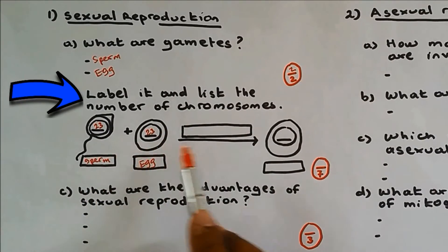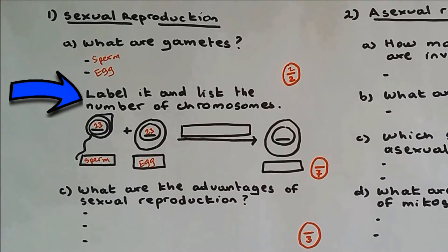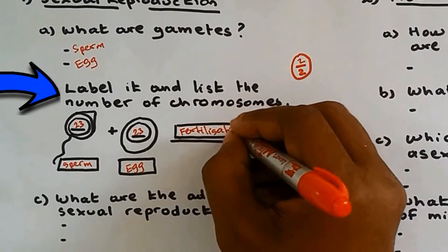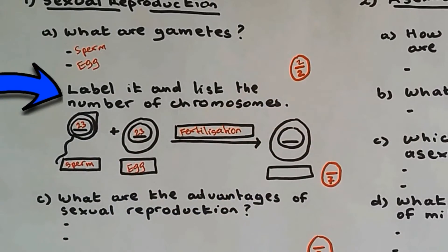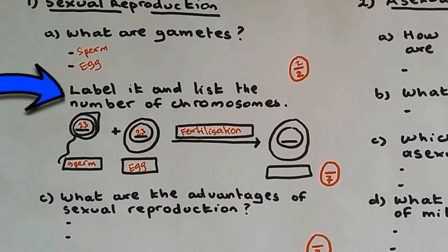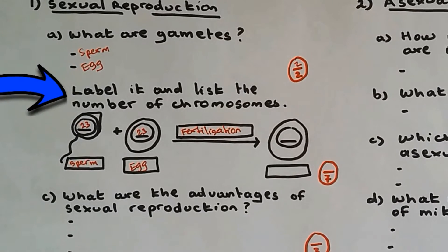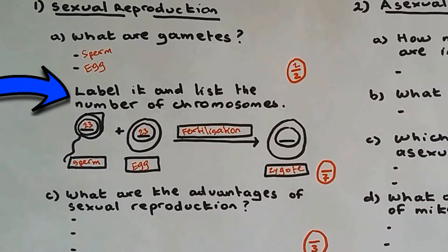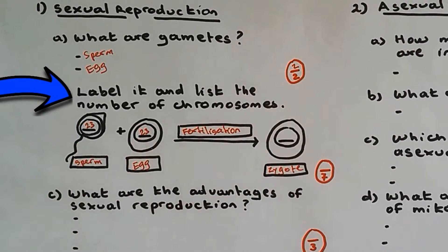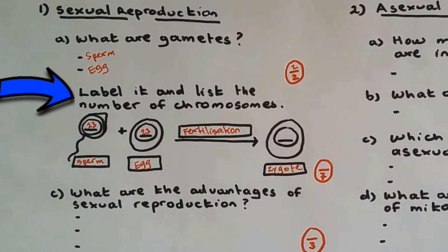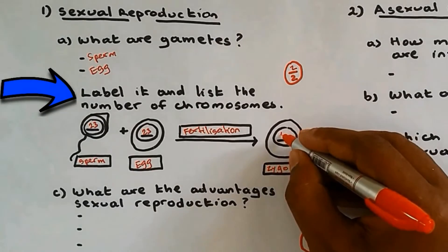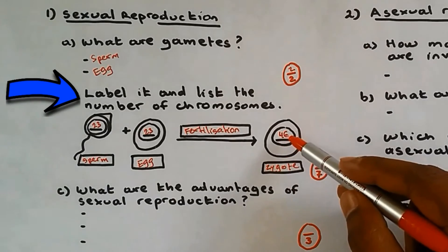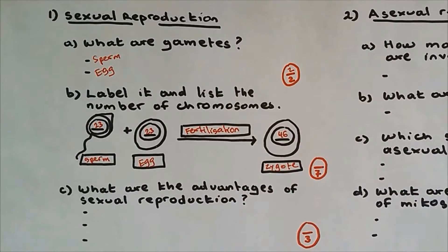The sperm contain 23 chromosomes and the egg contains 23 chromosomes. When a sperm and egg fuse together, the process is called fertilization. The cell made when a sperm and egg are fused together is called a zygote, which is a fertilized egg and contains 46 chromosomes.